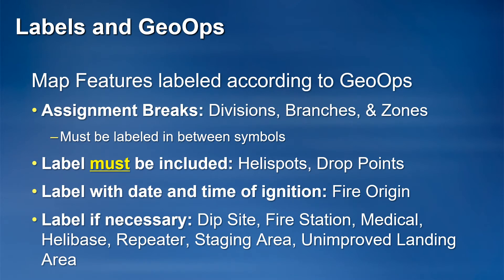According to GeoOps, certain incident features must always be labeled on incident maps. These include assignments such as divisions, branches, and zones, as well as drop points and helispot incident points. If shown on the map, the fire origin should be labeled with date and time of ignition if the information is known. Other incident points that may be labeled if necessary include dip sites, fire stations, medical points, helibases, repeaters, staging areas, and unimproved landing areas.